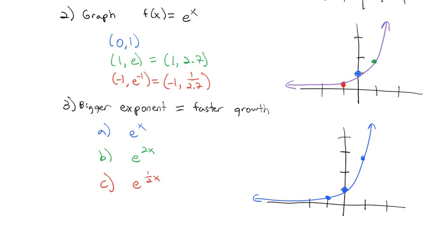With e^(2x), when x = 0, y is still 1, but when x = 1 we get e^2, which shoots off much steeper. When x = −1 we get e^(−2) instead of just e^(−1), making it smaller. The bigger exponent means growth happens at a much higher rate. Similarly, e^(x/2) only goes half as high as x grows and won't level off quite as fast. Smaller exponents mean smaller growth — a steeper graph for e^(2x) and a more shallow graph for e^(x/2).